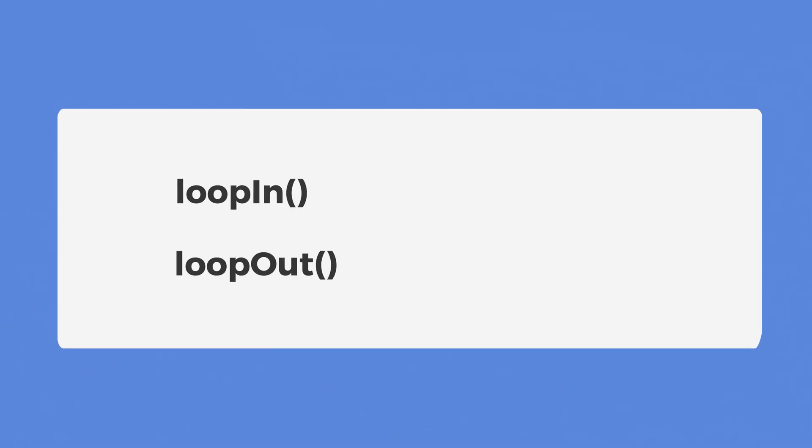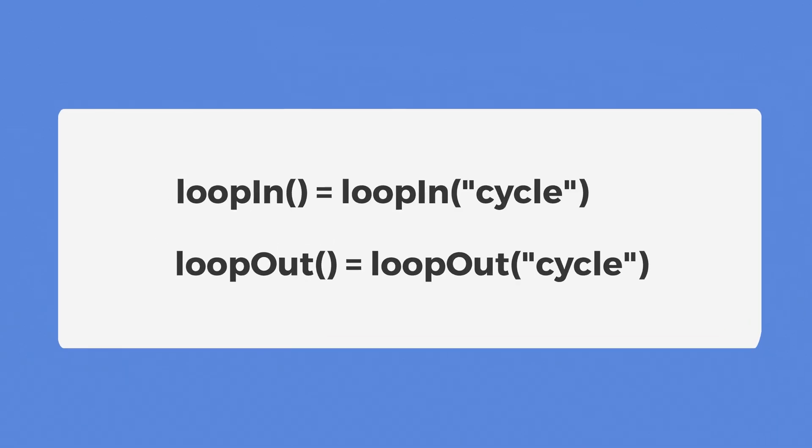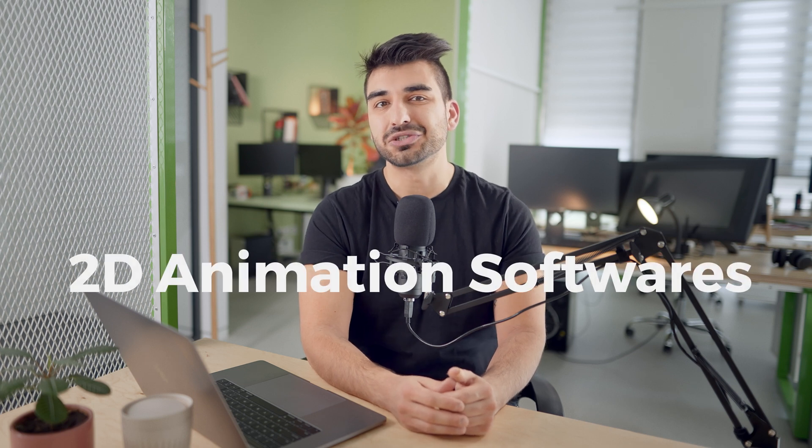So, for example, Loop in and Loop out with nothing in the parentheses will produce the same animation effect as Loop in Cycle or Loop out Cycle. Now let's talk about some other 2D animation softwares, their prices and levels.